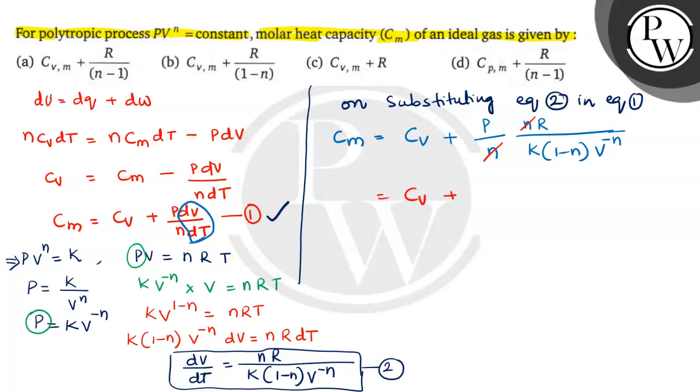This n gets cancelled. We are rearranging this as Cv + P × V^n / k × R / (1-n). From this equation you observe that PV^n = k, so this constant gets cancelled.